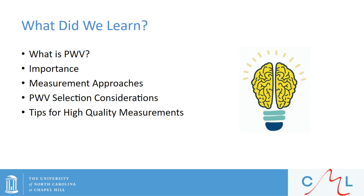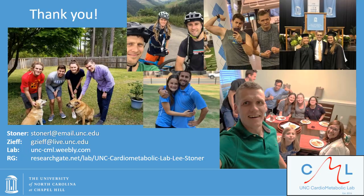To summarize: I gave some theoretical recommendations, including having a sound research question and understanding potential confounders. Some practical considerations, including having a good data sheet that acts as a recipe, knowing your anatomy, and knowing how to ascertain whether the waveform is of suitable quality. And device-based factors: know the device assumptions and ensure adequate training before a given study commences. Hopefully we've covered what pulse wave velocity is, why it's important, the measurement approaches, selection considerations, and tips for obtaining high quality measurements. We thank you very much for listening and welcome any and all questions.